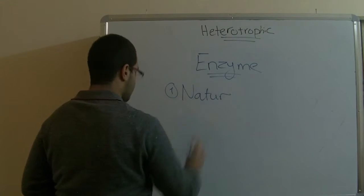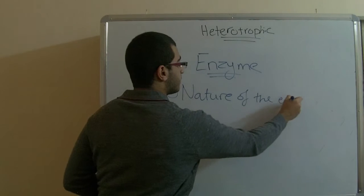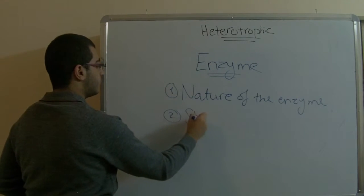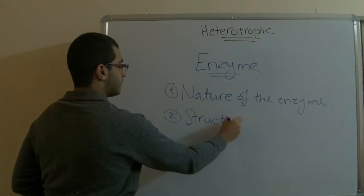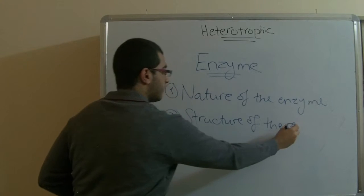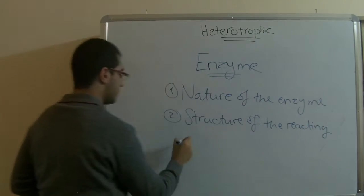The enzymatic reaction which occurs by the help of the enzyme depends on two factors: the nature of the enzyme and the structure of the reacting substances.